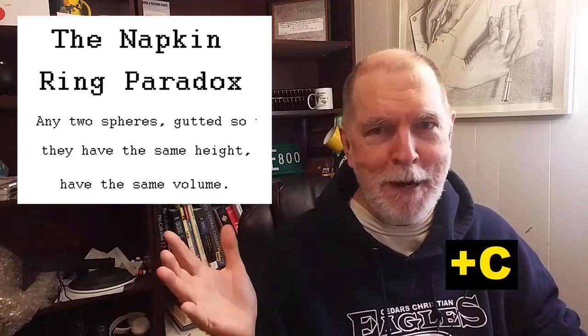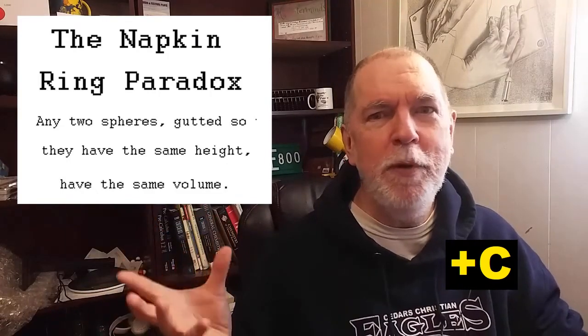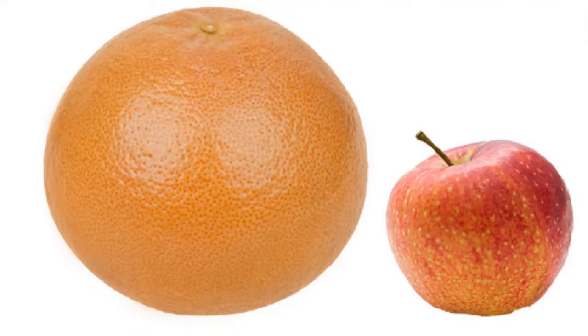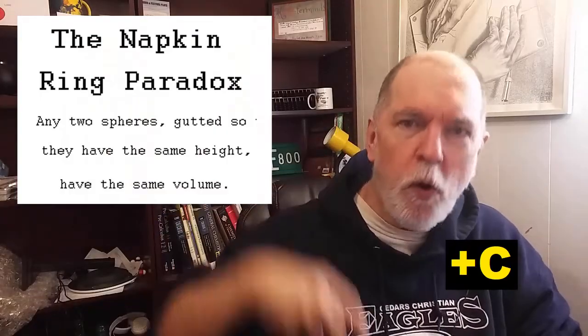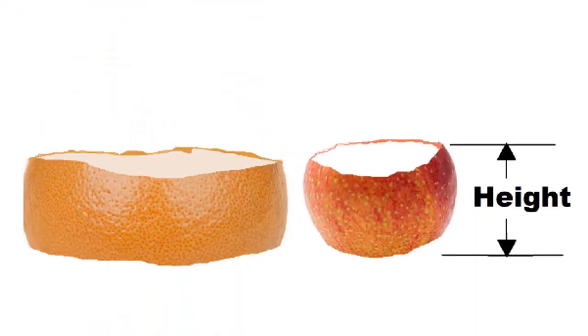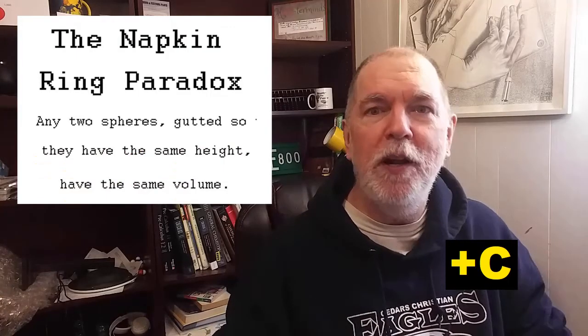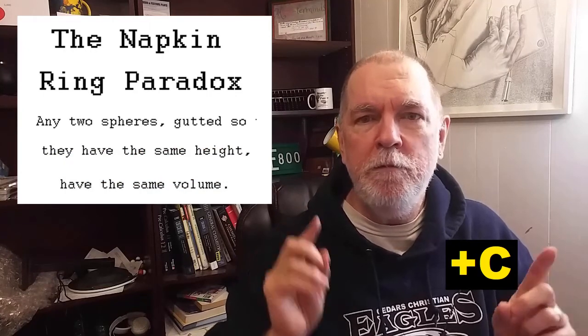Any two spheres, a proton and a planet, but we'll use a grapefruit and an apple, gutted with a hole through the center so that the resulting rings have the same height, the rings will have the same volume.